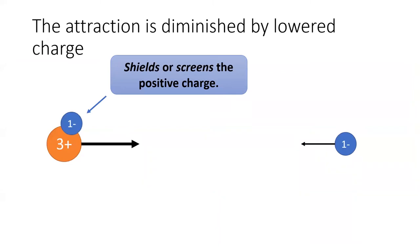In other words, the small negative charge shields or screens the central positive charge. We would say that the effective charge of this system is only 2+.